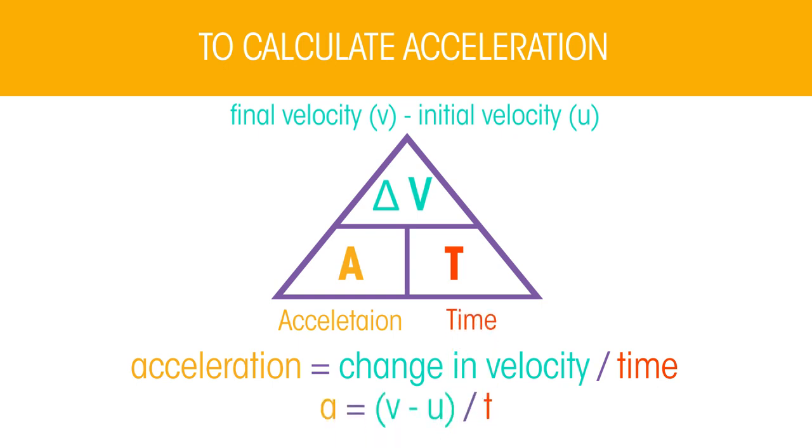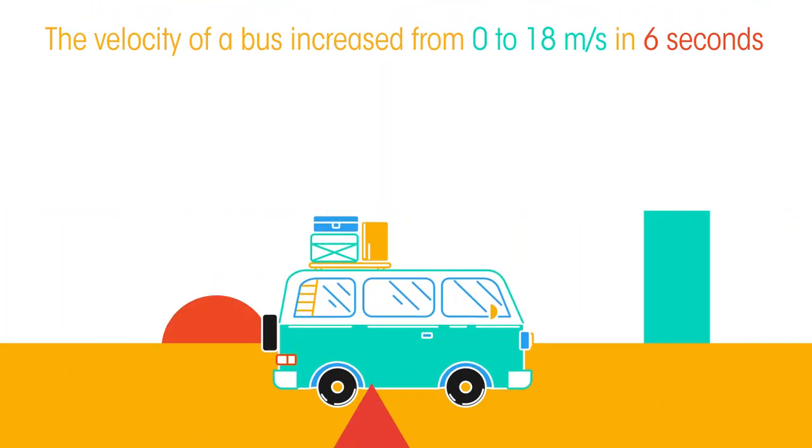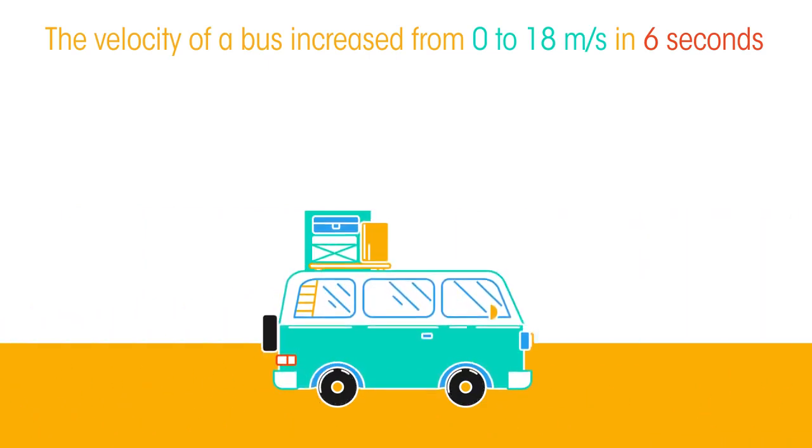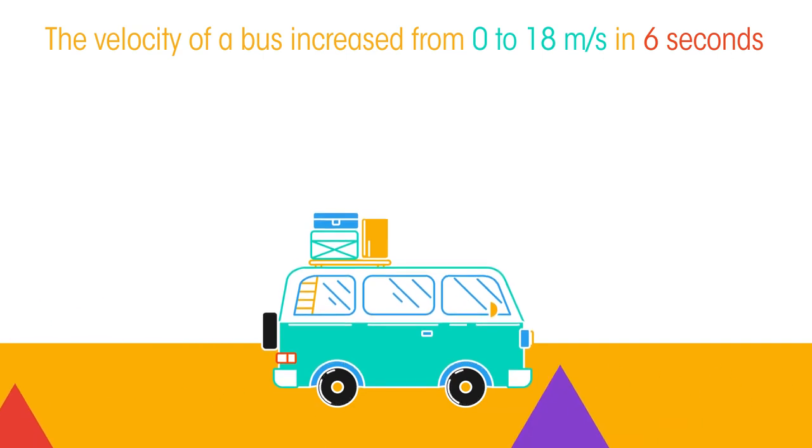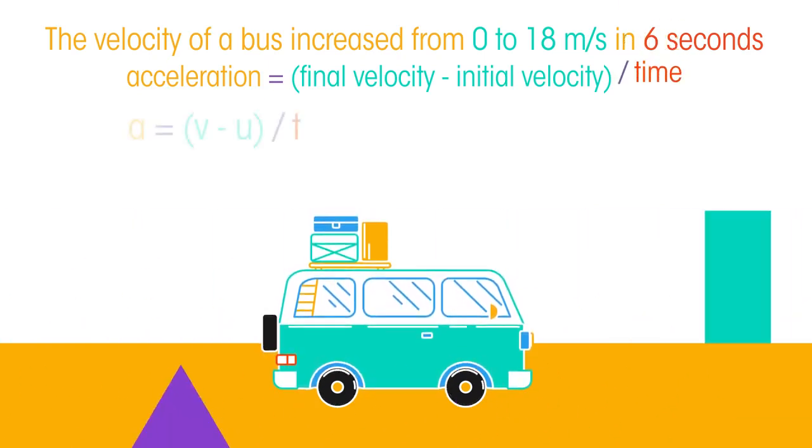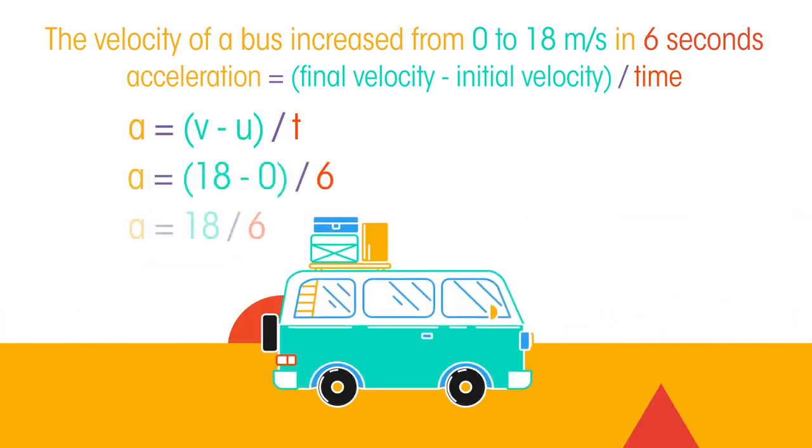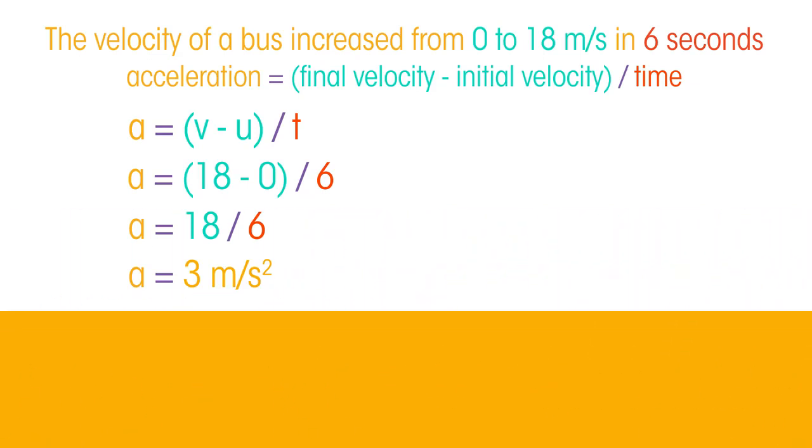Let's try an example. The velocity of a bus increased from zero to 18 meters per second in six seconds. Calculate its acceleration. So acceleration equals final velocity minus initial velocity over time.